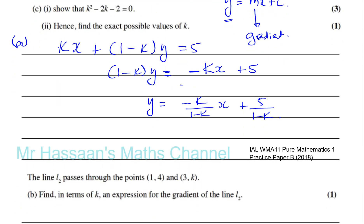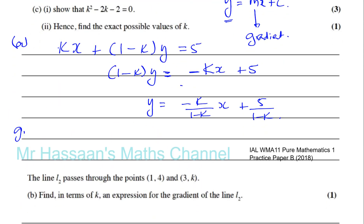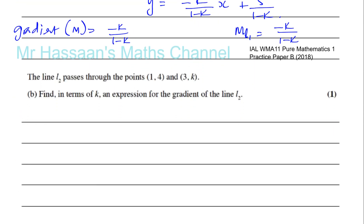So from this we can basically deduce that the gradient, the gradient, which is the M here, is this part over here. This is the gradient, the coefficient of X is equal to minus K over (1 minus K). So that's the gradient of the line L1. The gradient of line 1 is equal to minus K over (1 minus K). You could also write this as K over (K minus 1) if you want, just multiplying both top and bottom by minus 1. But let's see if that's actually sensible here.